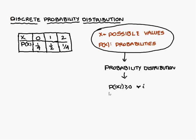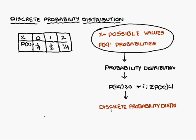If this probability distribution satisfies two conditions — all probabilities should be greater than or equal to zero, and the sum of the probabilities should be equal to one — then we call it a discrete probability distribution. For example, 1/4 + 1/2 + 1/4 = 1. For this, the mean formula is sigma of p(a) times x(a), that is probability times x(a). This is about the discrete probability distribution.